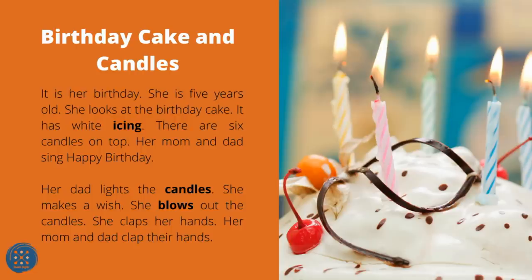Birthday Cake and Candles. It is her birthday — she is five years old. She looks at the birthday cake. It has white icing. There are six candles on top. Her mom and dad sing Happy Birthday. Her dad lights the candles. She makes a wish, blows out the candles, and claps her hands. Her mom and dad clap their hands too.